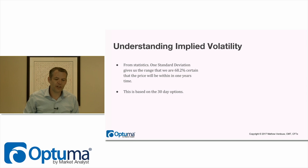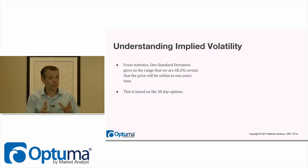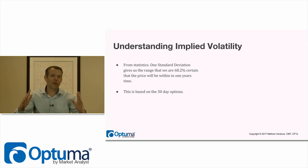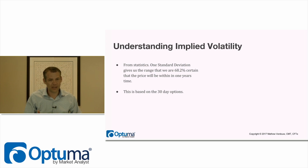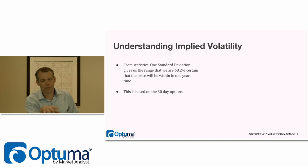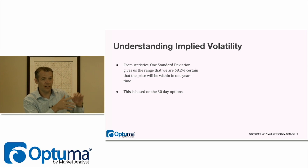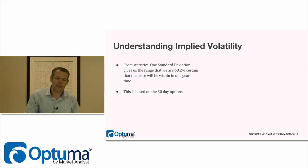Remember from statistics that one standard deviation gives us the range where we are 68.2% certain the price will be within a given period of time. From a Gaussian point of view, using the normal distribution, our first standard deviation is where we expect 68% of results to end up. This is what implied volatility works with — the one standard deviation range. The VIX calculation is based on the 30-day options, and we reverse-engineer that back into the implied volatility number.